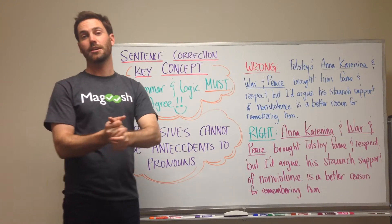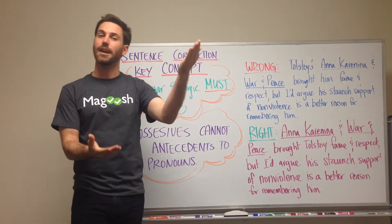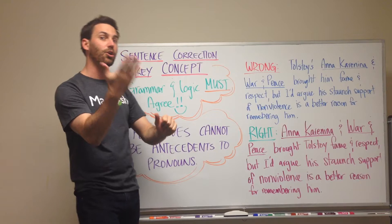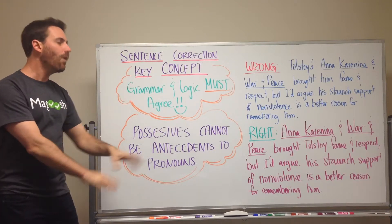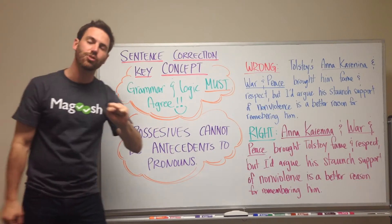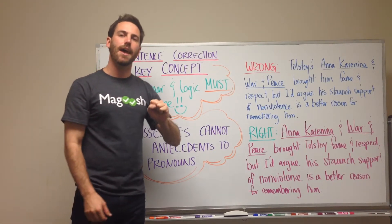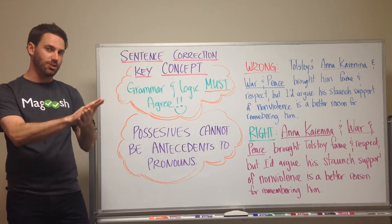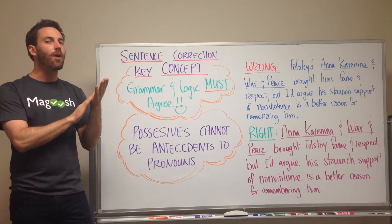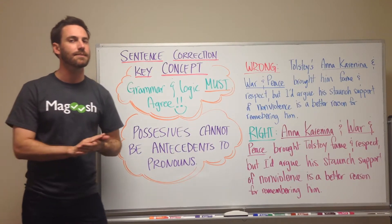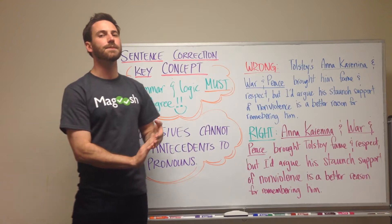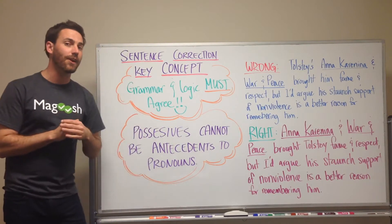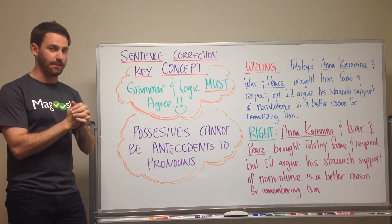So that means if you use a plural noun, you're going to need a plural pronoun. One specific trap that you may find in sentence correction questions involves pronouns and antecedents, and specifically pronouns that are possessive.